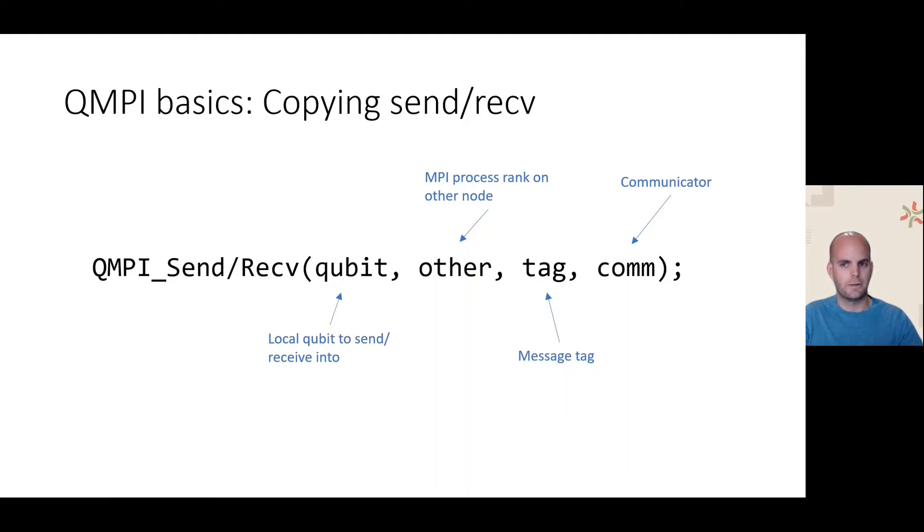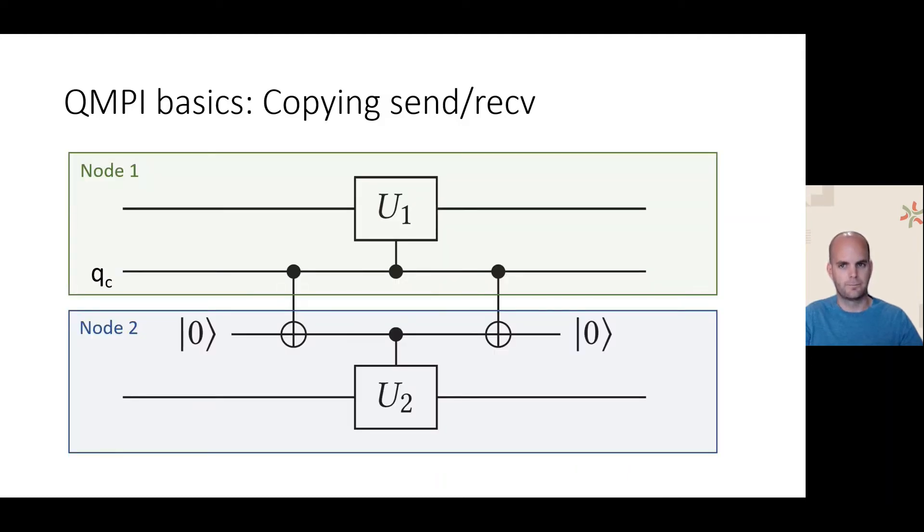For example, we can look at QMPI send receive, which creates an entangled copy of a qubit on another node. This function can be used to parallelize controlled subroutines if they act on distinct qubits but share a control qubit. The circuit would look like this, where U1 and U2 may be run in parallel since they act on distinct qubits but share the control qubit. So instead of first performing controlled U1 and then controlled U2, we can fan out the control qubit to the other node and execute U1 and U2 in parallel.